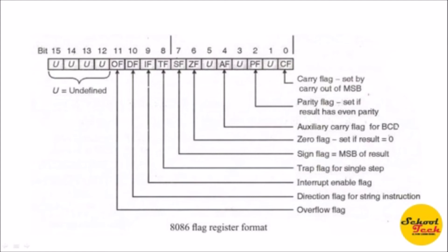AF is not directly available to the programmer — it is used internally by the processor. The Sign Flag (SF) indicates whether the result is positive or negative: when the result is negative (two's complement), SF is set to one; when positive, SF is reset to zero. The Overflow Flag (OF) indicates when the result generated by the processor is out of range — it is set to one when out of range, and reset to zero when in range.